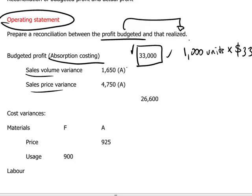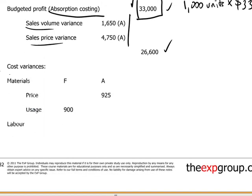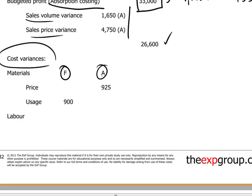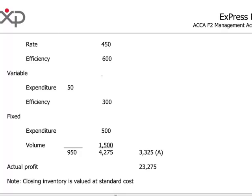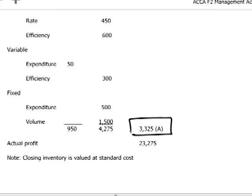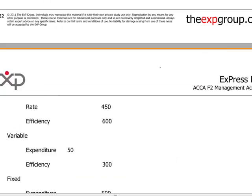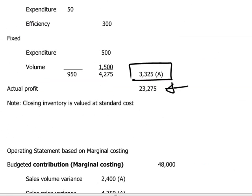In the previous discussion we calculated these figures, and now we're assembling them to modify our budgeted profit by what amounts to adverse sales volume and price variances, and then the net of our various cost variances. Listing the favorable and adverse variances, we come out to net adverse cost variances of $33,325. Deducting this from our adjusted budgeted profit above, we arrive at an actual profit of $23,275.